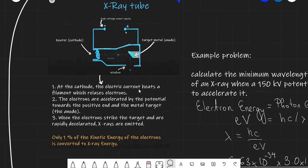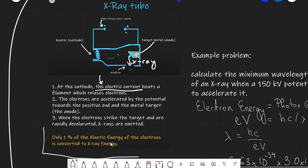The basic idea is that a very high electric current heats up the filament which releases electrons. The electrons fly towards the target and once they hit the target they emit x-rays. This process is known as Bremsstrahlung in German. This process is very inefficient — only one percent of the kinetic energy of the electrons is converted into x-ray energy.